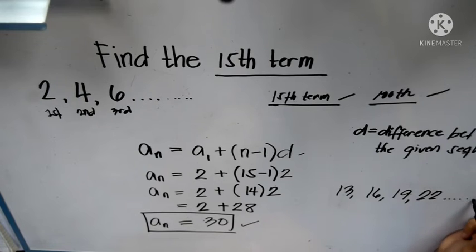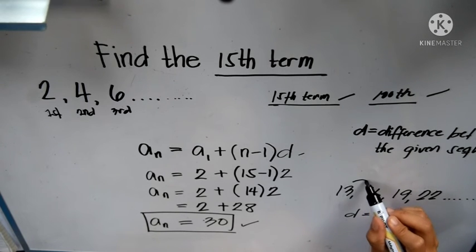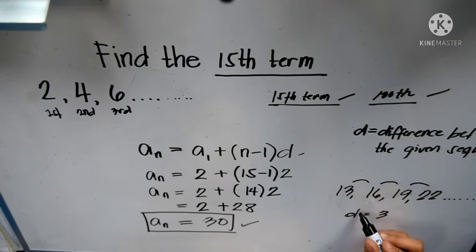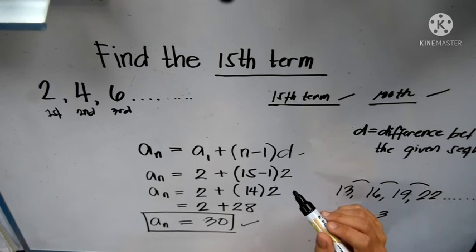Our d for this number sequence is 3. The difference between each number is 3, and that will be our d in our formula.